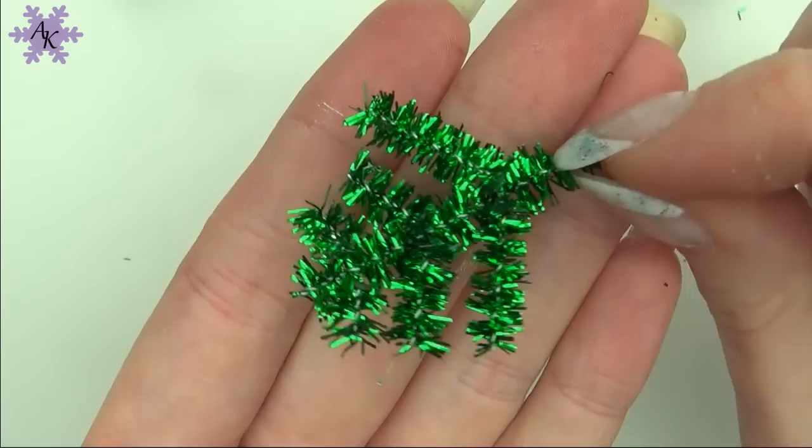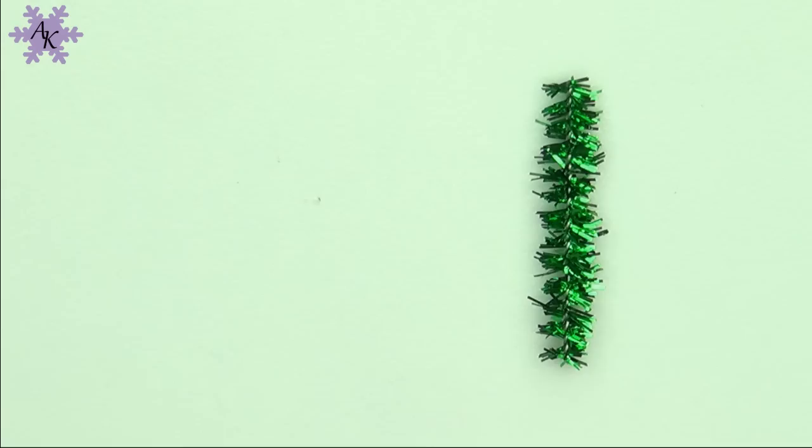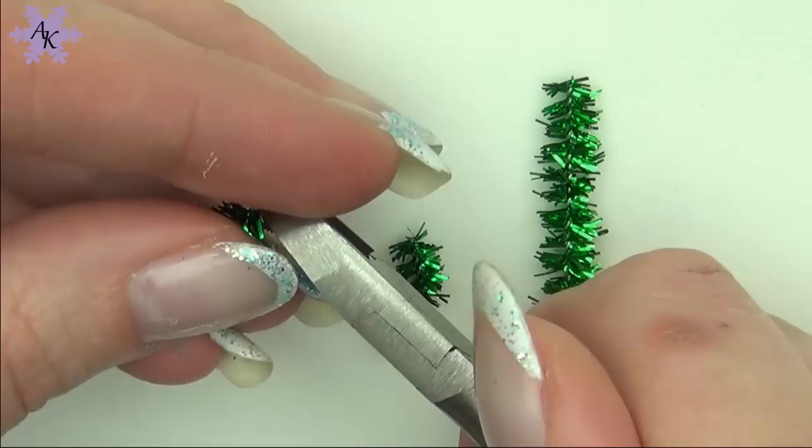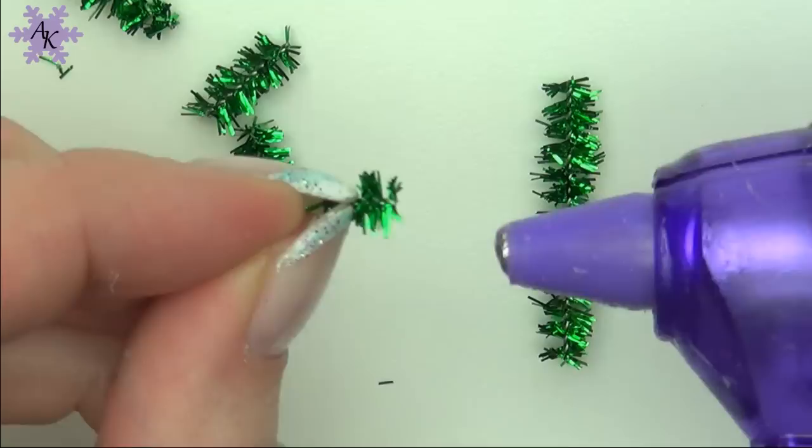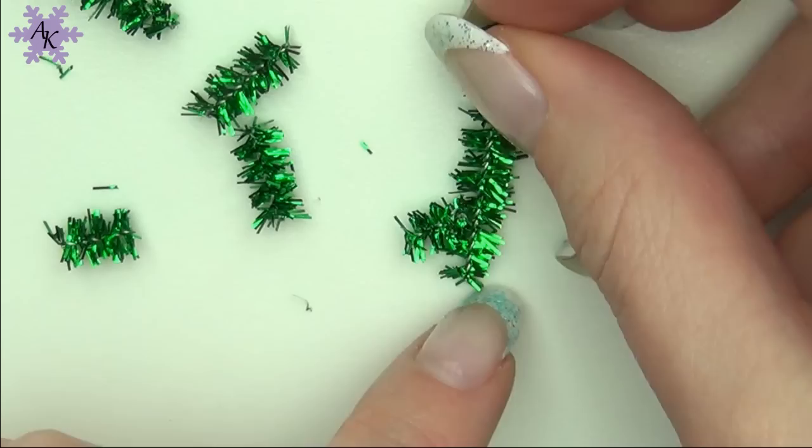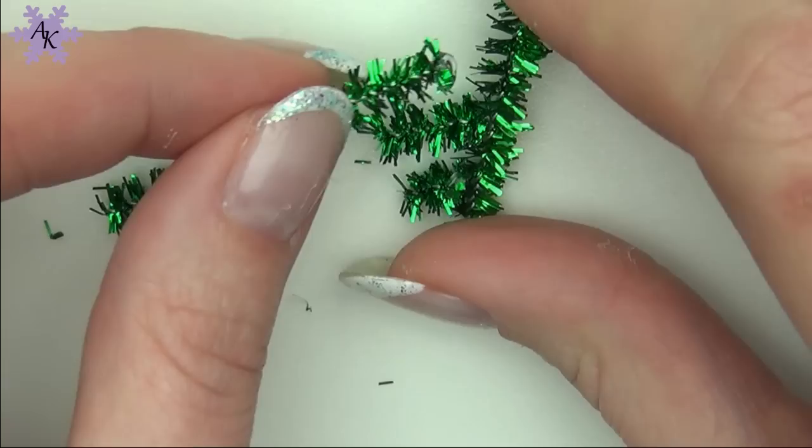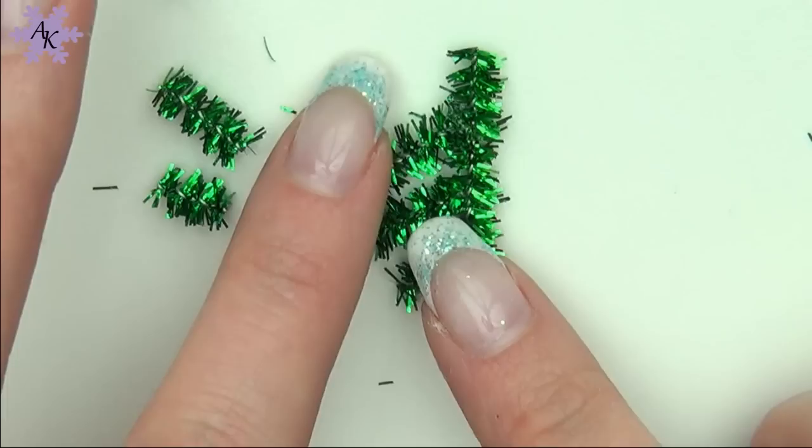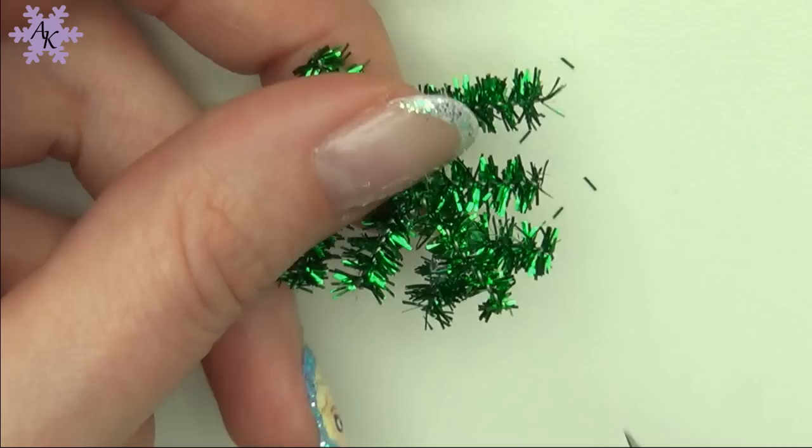Then for the branches I'm using these metallic pipe cleaners. Cut a long piece for the length of the branch and shorter pieces for the small ones coming off it. Now get your hot glue gun and glue the small pieces on like so. Trim the ends of the pipe cleaners if needed.